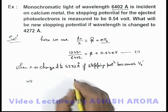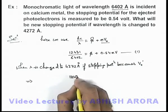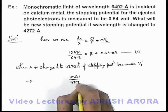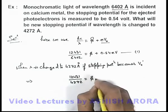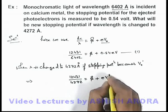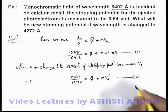This implies the same equation we can write as 12431 by 4272 is equal to φ plus eV₀ prime. This is your equation 2.